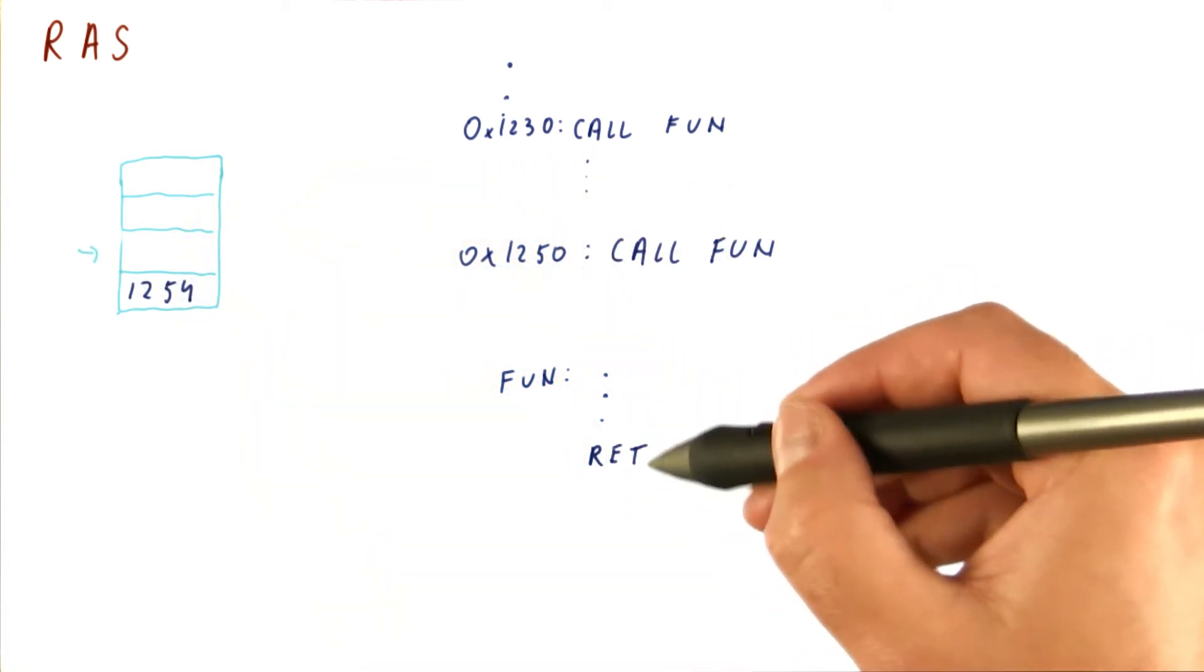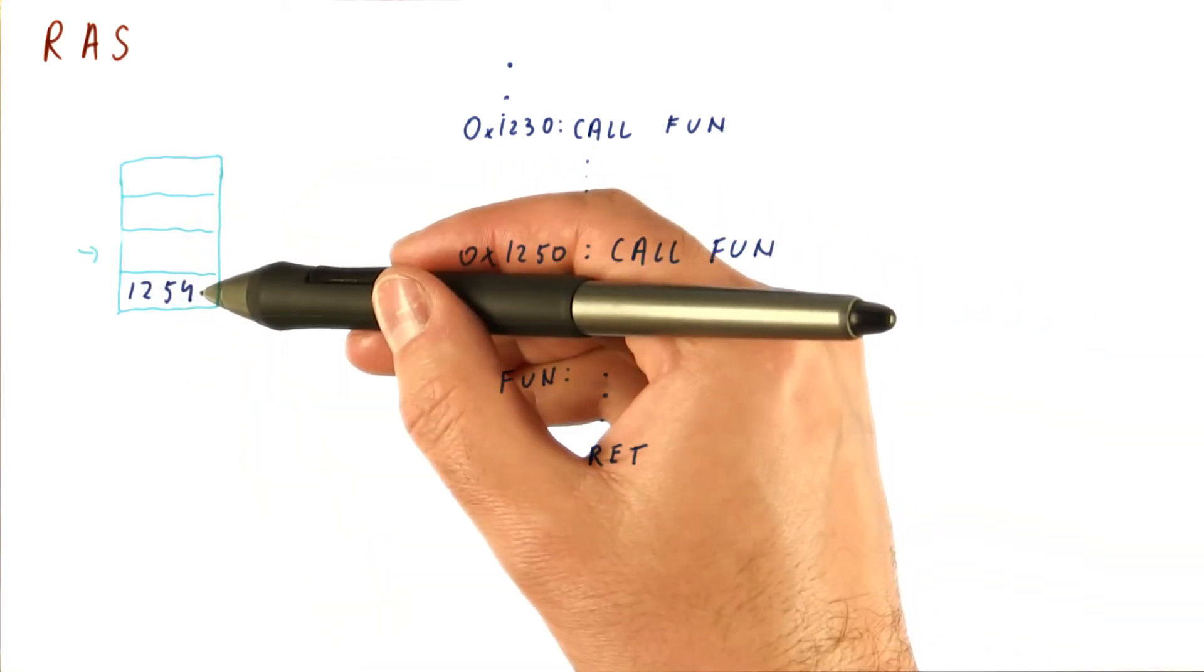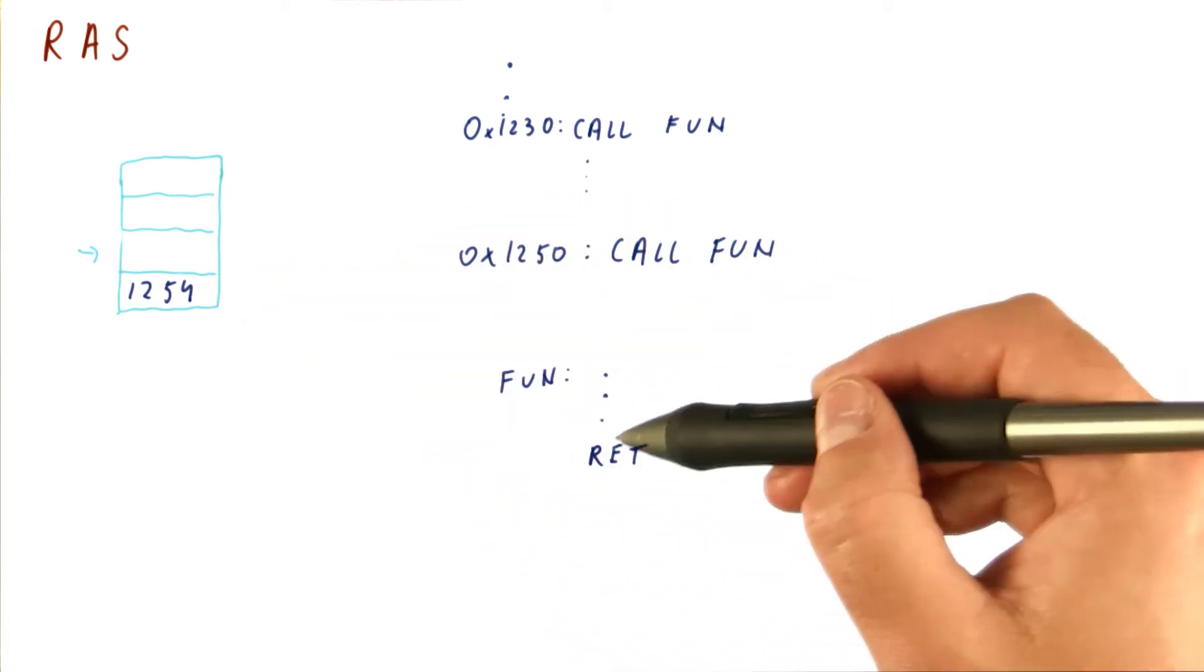The function executes. When we see the return instruction, we pop the return address and we again predict correctly.